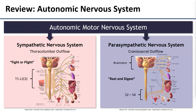Sympathetic is often referred to as the fight or flight system because it produces responses in the body that get you really amped up and ready to go. It originates from the spinal cord between spinal levels T1 and L2, occasionally L3, but we're going to stick with T1 to L2 for our guideline. Because of this, it is said to have thoracolumbar outflow.